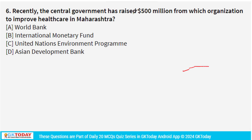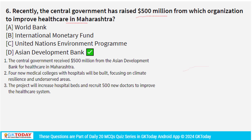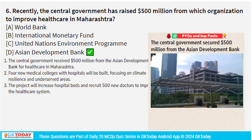Question 6: the central government secured 500 million dollars from the Asian Development Bank to improve healthcare and promote medical education in Maharashtra. The project will establish 4 new medical colleges with attached tertiary care hospitals. Its focus is on climate resilience, gender inclusivity, and coverage across all districts. Plans include 500 new doctors to strengthen the healthcare system.